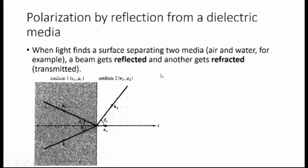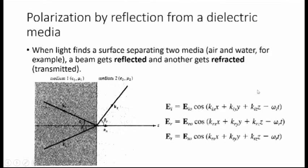Now I will discuss polarization by reflection from a dielectric media. The polarization or direction of electric field in an incident plane wave changes when it gets reflected. I should mention that I am following this analysis from the book of Sadiku. When an EM wave finds the surface separating two mediums, two new waves get created: a transmitted wave that goes into the second medium, and a reflected wave that gets reflected back into the first medium. So we have three waves here, and all of them are expressed in terms of electric field.